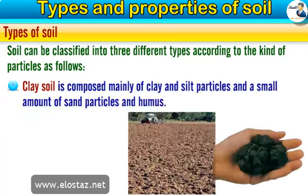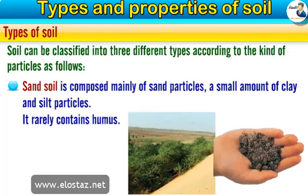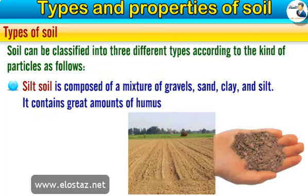Clay soil is composed mainly of clay and silt particles, and a small amount of sand particles and humus. Sand soil is composed mainly of sand particles and a small amount of clay and silt particles; it rarely contains humus. Silt soil is composed of a mixture of gravels, sand, clay, and silt, and it contains great amounts of humus.